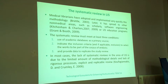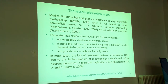The systematic review must meet at least three conditions. First, use of academic databases as a primary source. Second, indicate the inclusion criteria and, if applicable, exclusion criteria to define the works to be part of the corpus of analysis. And third, provide data to replicate the study review.